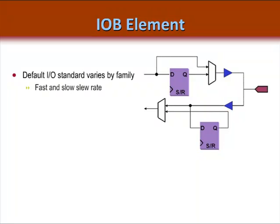Each IOB includes the ability to select a different IO standard for each IO pin. The default IO standard varies by device family because each device is built at a different technology node. Each pin also supports a programmable slew rate. Slow slew rate is the default, and careful use of fast slew rate is always recommended because it makes the design more susceptible to ground bounce. For more information about supported IO standards, please refer to your device's data sheet.